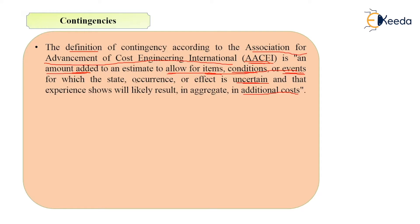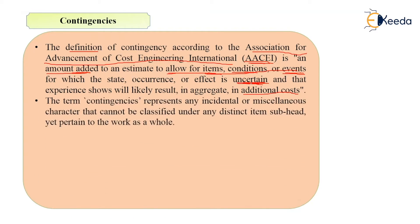A particular amount will be added into the estimate for something that may occur and is uncertain. This word 'uncertain' is important — we cannot say with certainty that this item will occur in the construction process. So it is an uncertain item. We have to add a particular amount into the estimate, and that is your contingency. We do not know at the time of estimation whether this item, condition, or event may occur.